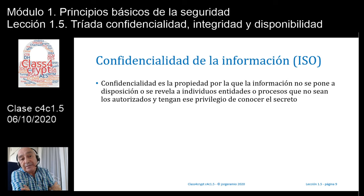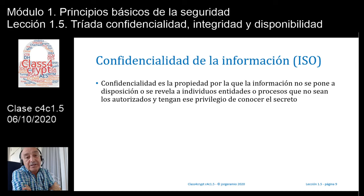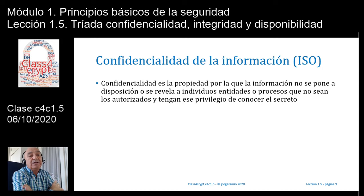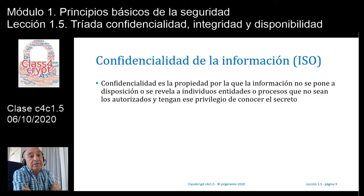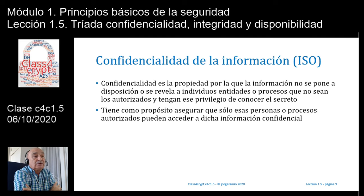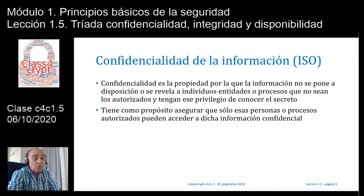Dice la ISO que confidencialidad es la propiedad por la que la información no se pone a disposición o se revela a individuos, entidades o procesos que no sean los autorizados y tengan ese privilegio de conocer ese secreto. La información puede ser secreta o no. Si la información es pública, no tengo por qué ocupar recursos para dotarle de confidencialidad. Pero si la información debe mantener un tipo de secreto, debe ser del tipo confidencial, entonces sí que tendré que dar los recursos para que se mantenga ese secreto. Tiene como propósito asegurar que solo esas personas autorizadas, o bien esos procesos autorizados, puedan acceder a esa información.